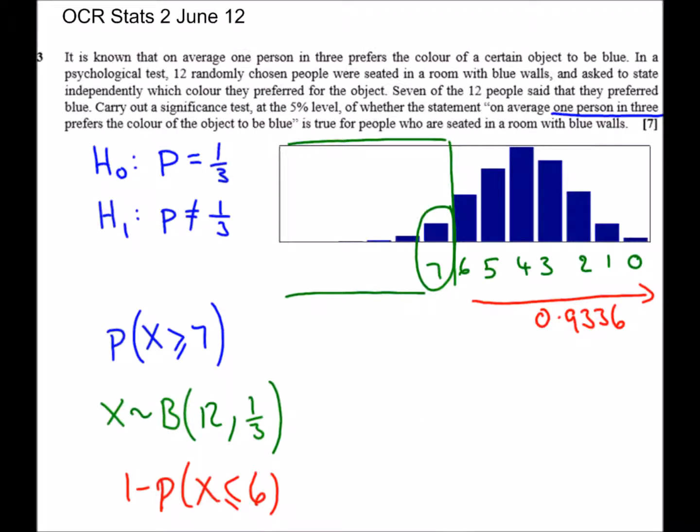So I'm just going to use that number. So we have the probability I get less than or equal to six is 0.9336, which means the probability that I get more than or equal to seven is going to be 0.0664, which is about 6%. So we can say as a probability 0.0664 is greater than 0.025.